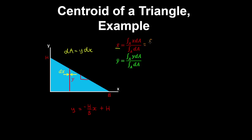So therefore we can rewrite this integral as an integral from 0 to b, and we have x multiplied by dA. So that would be y, which is this term, which is minus h on b by x plus h, and we integrate over x. And that's divided by the integral from 0 to b of dA, which is minus h on b by x plus h, and we integrate with respect to x.